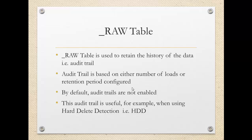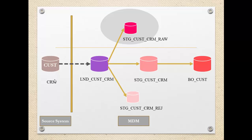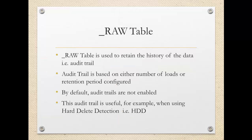This audit trail is useful when you're going to use hard delete detection (HDD) — deleting data in the source system itself. For example, in the first load the customer will have 10 records pushed. When the data is pushed a second time, the system has nine records — that means one record is deleted. To determine the deleted record, the raw table will be used. In the next session we'll see what hard delete detection is, or you can see my other videos about hard delete detection, which explain how the raw table is used.